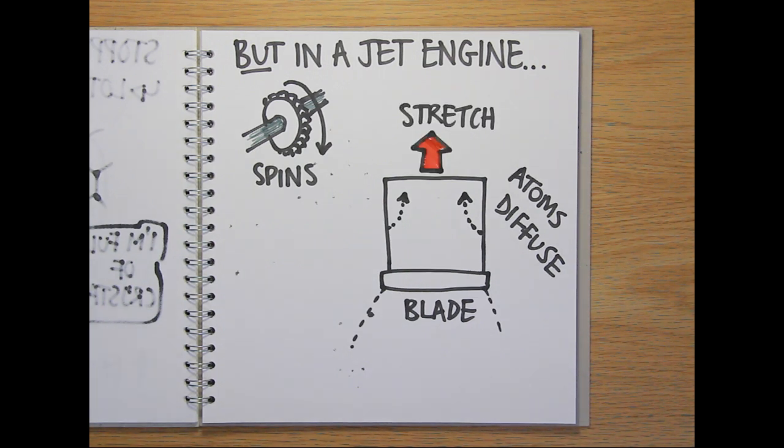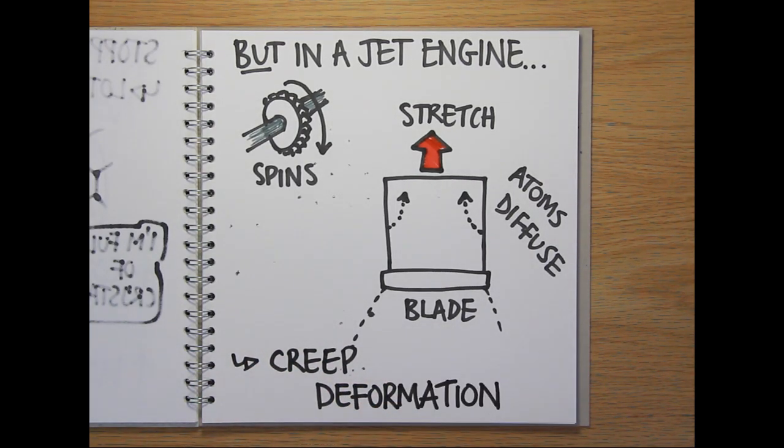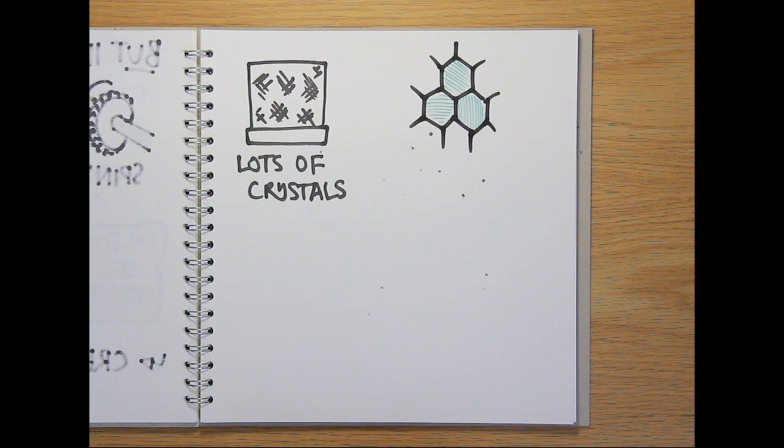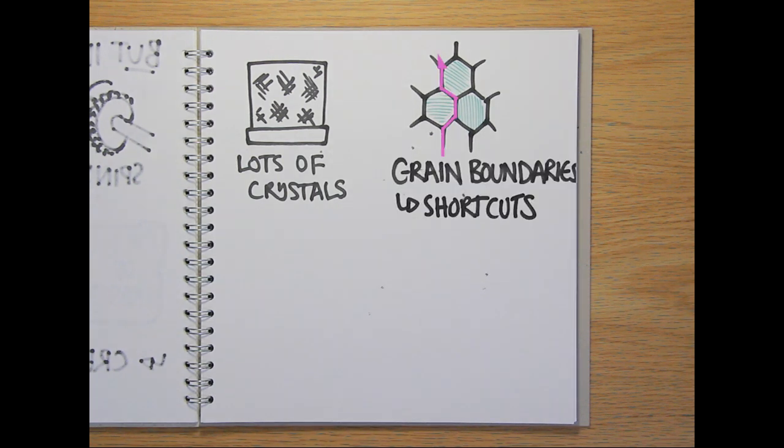making the blades stretch outward away from the centre. This process is called creep deformation. If the blade was made up of lots of crystals, the diffusing atoms could take shortcuts along the grain boundaries, accelerating the creep process.